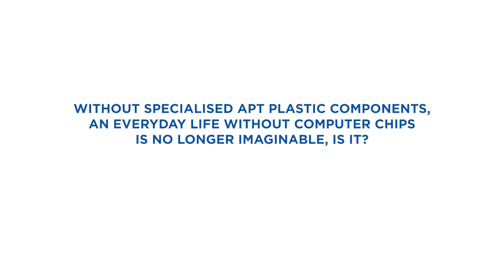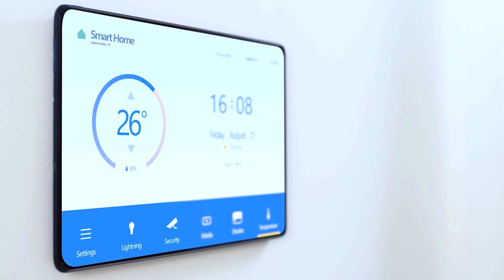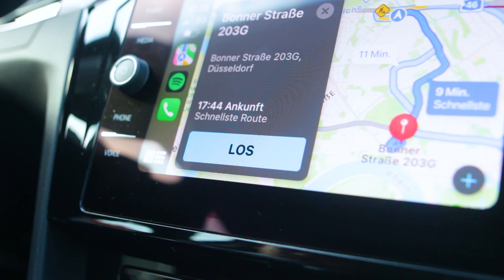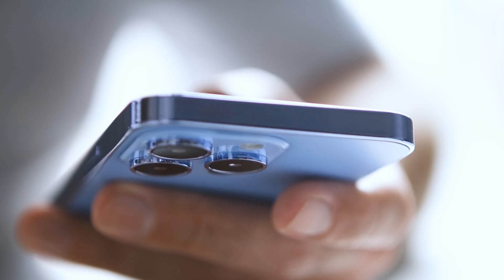Without specialized APT plastic components, everyday life without computer chips is no longer imaginable. Without computer chips, life as we know it would not be the same. The use of computer chips is extremely diverse — whether in smart home devices, modern coffee machines, cars, laptops, or smartphones, chips are installed everywhere. We support the semiconductor industry with our tube components in chip production. APT tubes are encountered by us every day — many just don't know it.